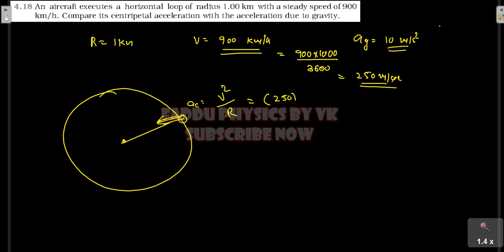Here you can see 250 meter per second whole square divided by R, R is 1000. So 250 into 250 divided by 1000, 62.5 meter per second square.